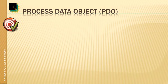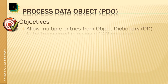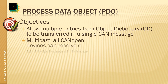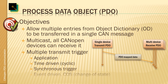Using the process data objects in CANOpen allows us to take multiple object dictionary entries from a node and pack them all into one message, so multiple data objects can be transferred. It is a multicast, meaning anyone who wants to receive it can configure itself to receive the data, so it can simultaneously go to different receivers. And there are multiple transmit triggers available — besides the application, there can also be an automatic time-driven, synchronous, event-driven, or other trigger, or a combination of any of these.